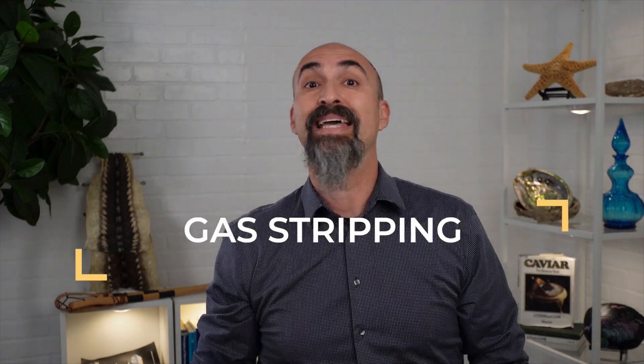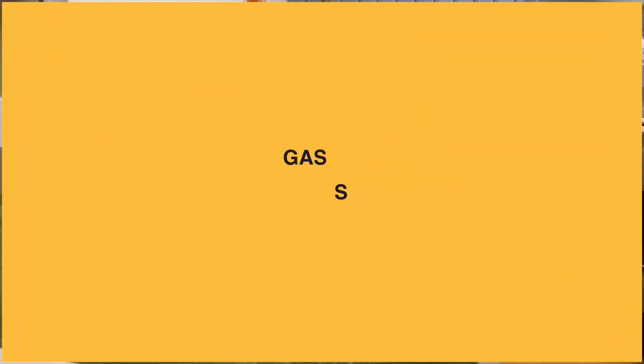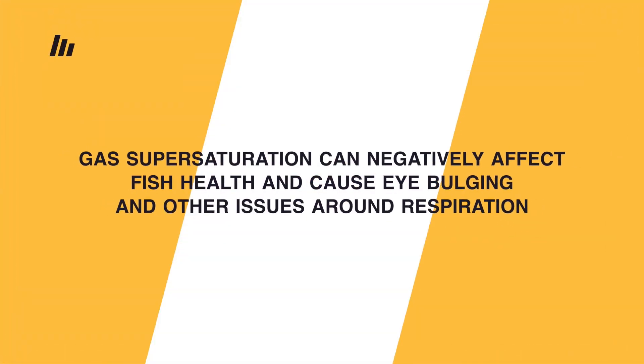Our next recirculating aquaculture system process is gas stripping. The purpose of this step is to reduce carbon dioxide (CO2) and other gases that can become saturated or even super-saturated in your culture water — this could be nitrogen, oxygen, argon, or many other gases in the system. Increased CO2 concentrations will reduce pH and can become toxic to fish, and could also reduce fish feeding behavior.